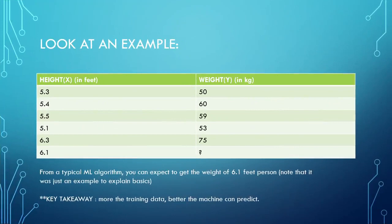Let us understand with an example. For understanding purposes, I've created a table showing that a 5.3-feet person weighs 50 kg, a 5.4-feet person weighs 60 kg, and so on. From a typical ML algorithm you can expect to get the weight of a 6.1-feet person. With only five training data points, the machine will try to predict the relation between x and y and find the corresponding weight for height 6.1 feet — though accuracy is limited with so little data.